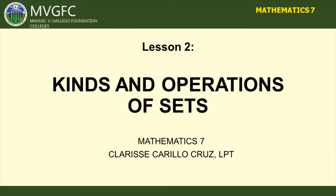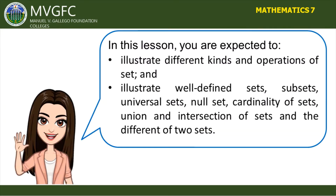Welcome! This is Teacher Clarisse, and today we are going to learn Lesson 2 for Grade 7 Mathematics: the Kinds and Operations of Sets. In Lesson 1, you were able to identify and illustrate the notation and description of different sets. Today you will learn the kinds and operations of sets, including well-defined sets, subsets, universal sets, null sets, cardinality, union, intersection, and the difference of two sets.